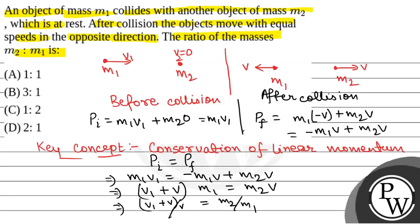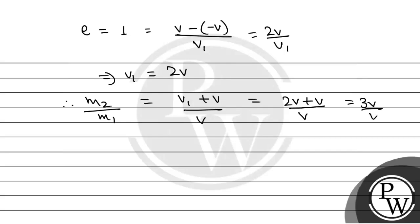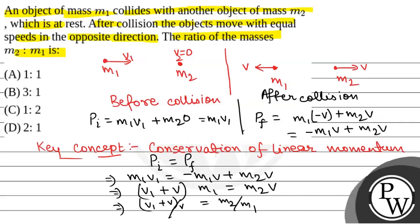Putting this value, we have m2/m1. Therefore, m2/m1 equals (v1 + v)/v, that is equal to (2v + v)/v, which equals 3v/v. So m2/m1 equals 3. That is the correct answer.